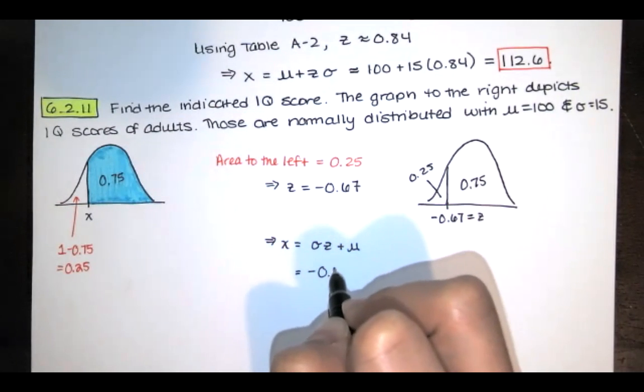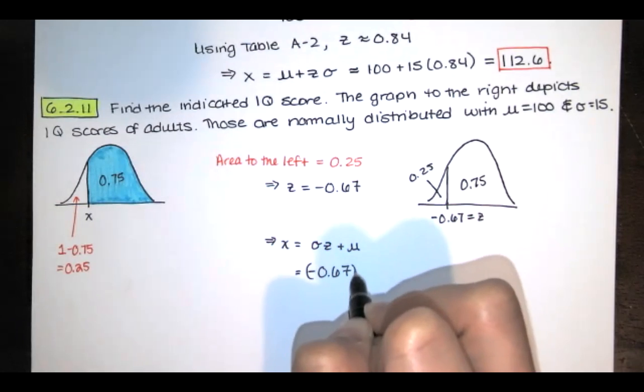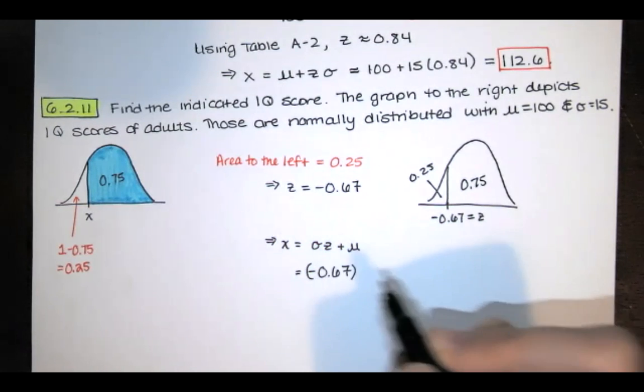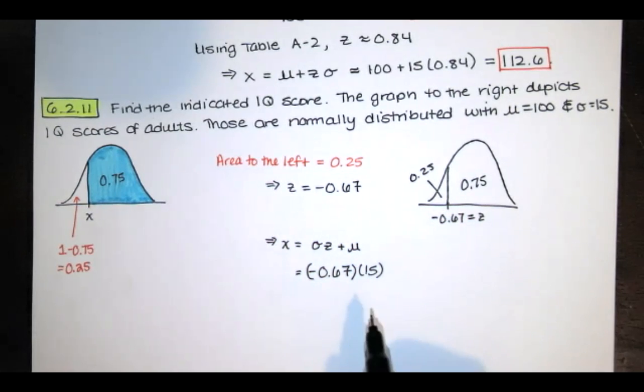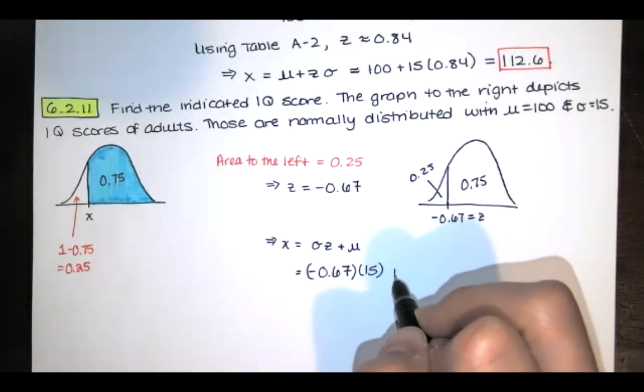So we are negative 0.67 standard deviations below the mean, and a single standard deviation for IQ scores is 15. That's going to give us a number of deviations from the mean. It's how much this x value deviates from the mean. If I add the mean to that, I'll get the x value back.